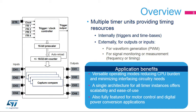The duty cycle then simply corresponds to the ratio between input capture 1 and input capture 2. The timer also includes an XOR function to combine the three input channels with XOR logic. This is typically used to handle the three 120-degree phase-shifted signals coming from the hall sensors in electrical motors, allowing a capture value directly usable for speed regulation.